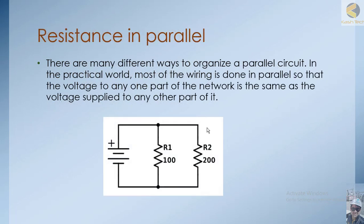If we have, for example, two resistances and we add a third resistance, the total resistance of the circuit will decrease. This is unlike a series circuit, where adding a resistance keeps increasing the total resistance. In a parallel circuit, adding more resistances decreases the total resistance.